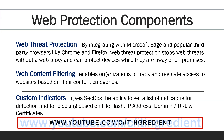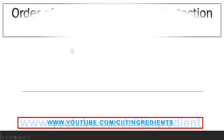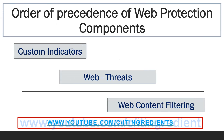Now we know that web protection is made up of multiple components — web threat protection, web content filtering, and custom indicators. Each of these components is enforced by the SmartScreen client in Microsoft Edge and by the network protection client for other browsers and applications. If there is any conflict between these components, custom indicators will always have higher precedence than web threats and web content filtering.